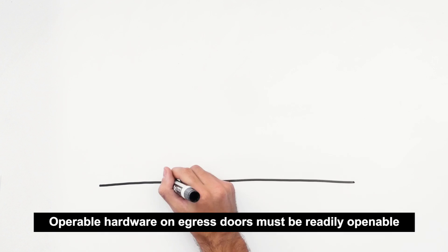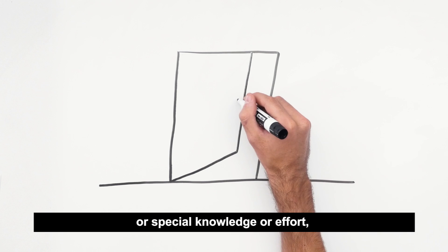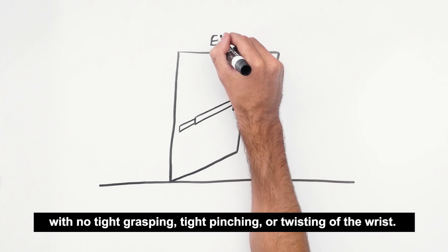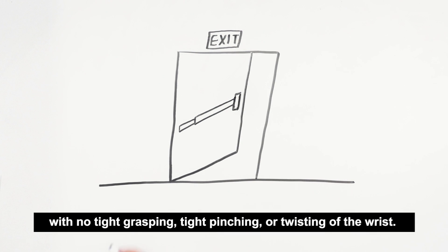Operable hardware on egress doors must be readily openable from the egress side without a key or special knowledge or effort. And most hardware is also required to operate with no tight grasping, tight pinching, or twisting of the wrist.